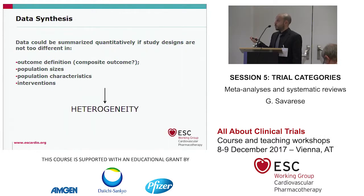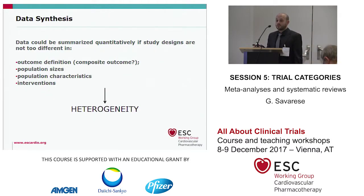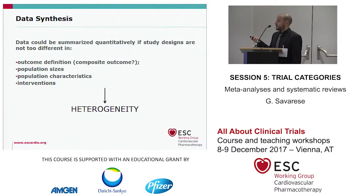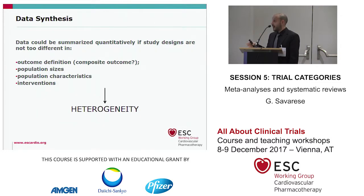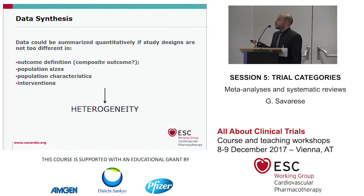Another important point: if we have a study with 10,000 patients, a study with 1,000 patients, and a study with 100 patients, and we pool them, the results of the meta-analysis will essentially be the same as the results of the larger study. So does it make sense to have a meta-analysis in such a situation? Maybe not. Also, if population characteristics are really different — one trial investigating effects of a drug in patients with diabetes and another in patients with hypertension — pooling these results may not mean anything. These factors contribute to heterogeneity, which is very important to assess in meta-analysis.